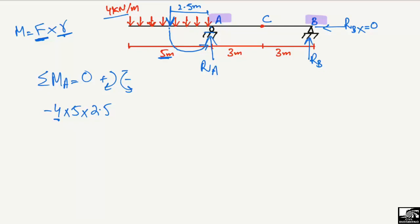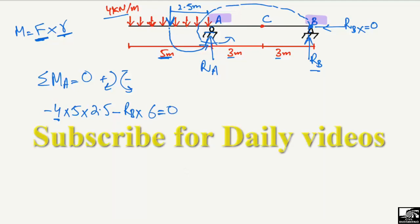The second load that creates a moment about point A is RB. This also creates an anti-clockwise moment about point A, so it is also taken as negative: minus RB multiplied by the moment arm, which is the perpendicular distance from point B to point A. That distance is 3 + 3 = 6 meters.